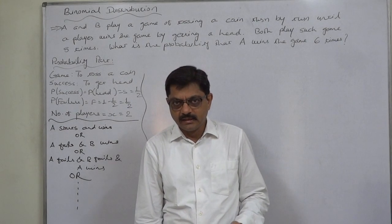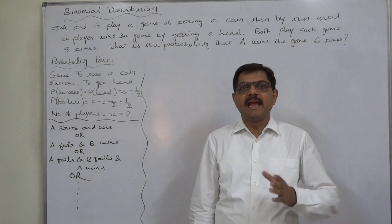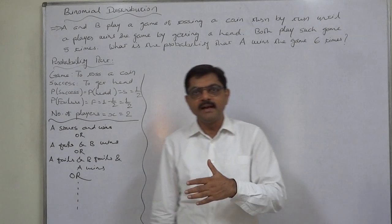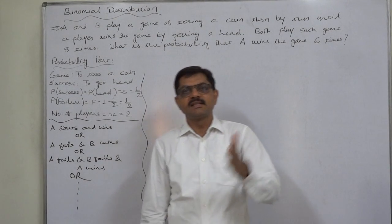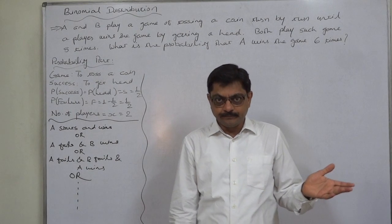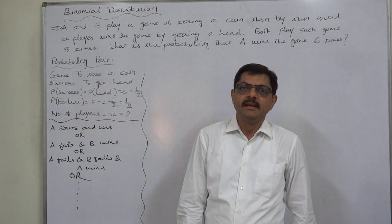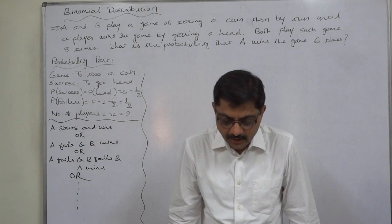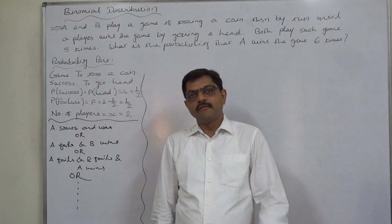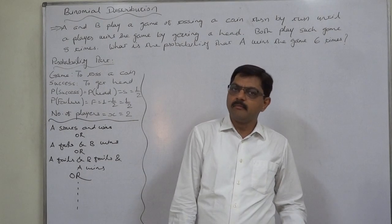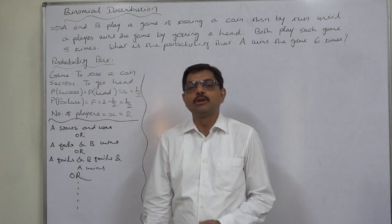N is eight and R is six. P is the probability of A winning the game, because we want to find the probability that A wins the game six times out of eight. So probability of A winning the game will be P for the binomial formula. And probability of A not winning, or B winning the game — because there are only two players — will be Q.